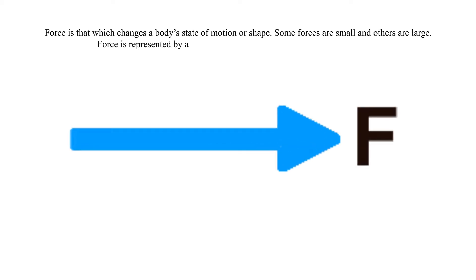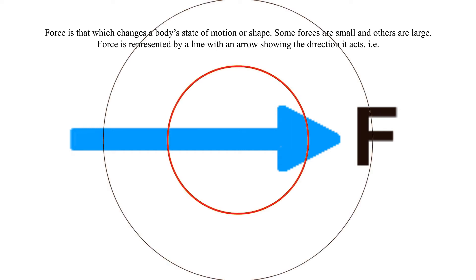Force is that which changes a body's state of motion or shape. Some forces are small and others are large. Force is represented by a line with an arrow showing the direction it acts. Force can be categorized in two ways. These are: